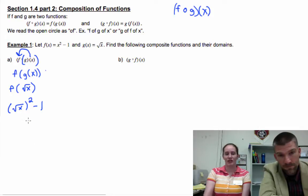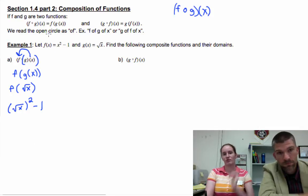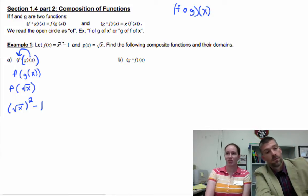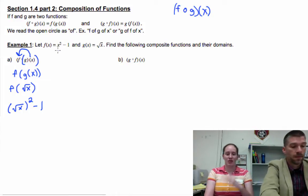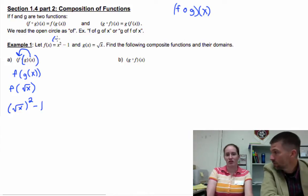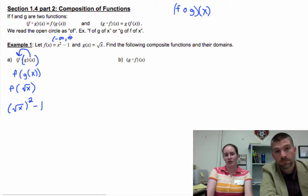And then we're going to have what that actually is. So f is something squared minus 1, and that something is now the square root of x. That's it. That's how I recommend doing these until we get comfortable.